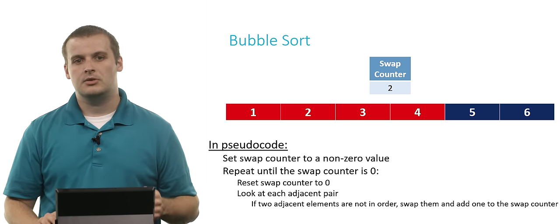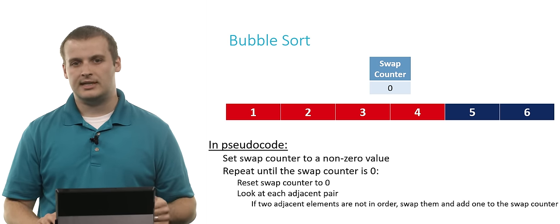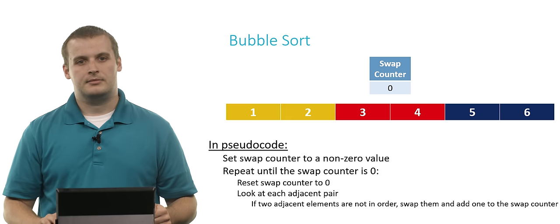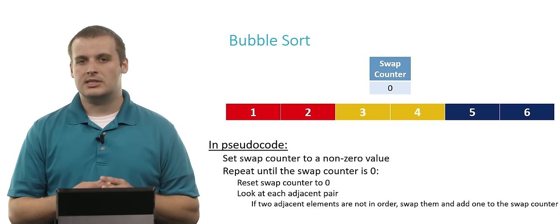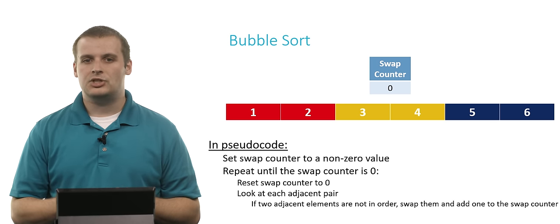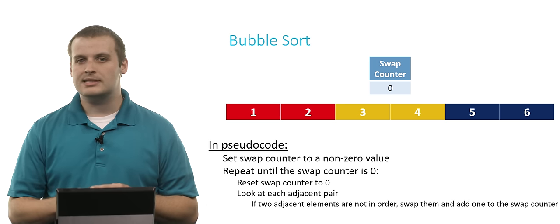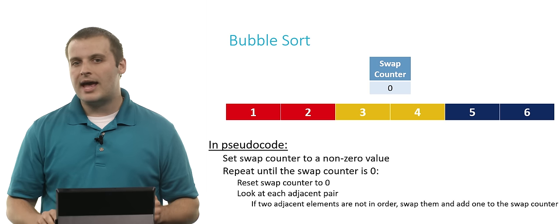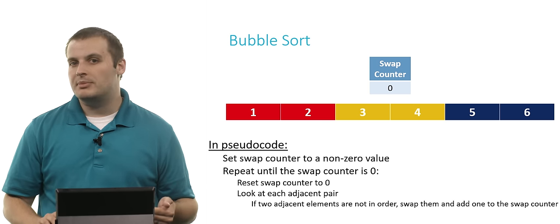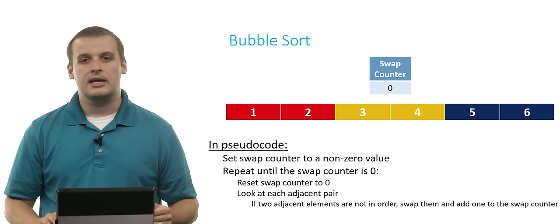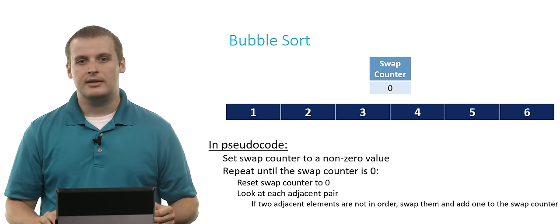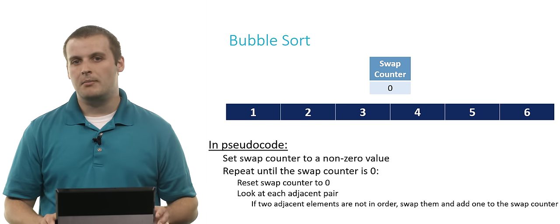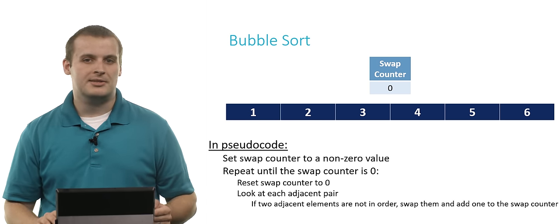Repeat until the swap counter is zero — so we reset the swap counter to zero and look at each adjacent pair. One and two are in order. Two and three are in order. Three and four are in order. We've completed looking at every adjacent pair, but the swap counter is still zero. If we don't have to switch any elements, then they must be in order by virtue of this process. We can now declare the entire array must be sorted because we didn't have to swap any elements.